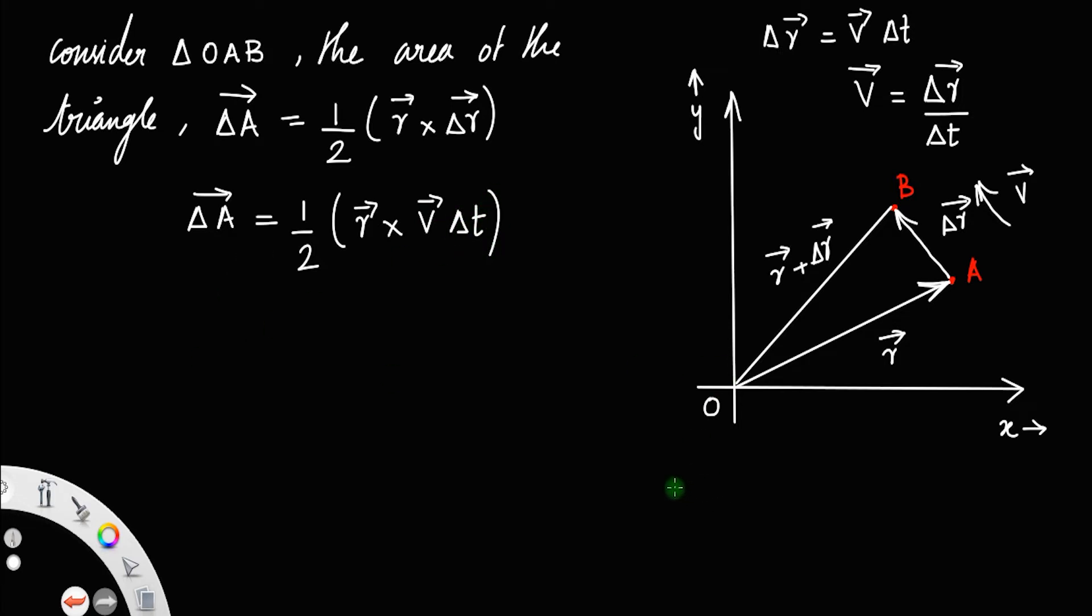Also, you know the momentum of the particle will be mass times velocity, implies velocity will be momentum divided by mass. So, here you can substitute delta A is equal to half r cross, instead of v you can write p by m, p by m delta t.